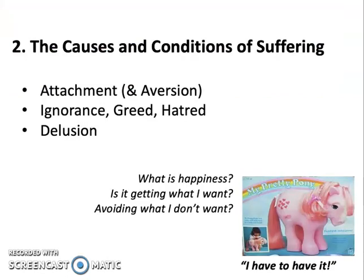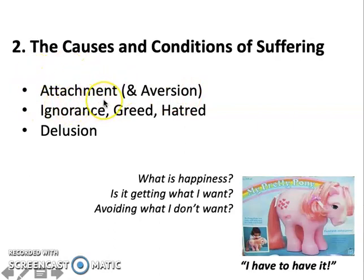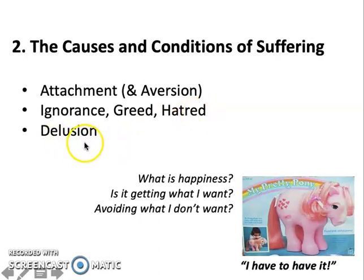The Buddhist proposition is that there are causes and conditions of suffering. The suffering we have is rooted in our habitual minds of attachment and its flipside, aversion — which can also be translated as desire or craving. And these are rooted in our ignorance, our greed, and hatred, and our delusional mind — the fact that our minds are subject to illusions and delusions.